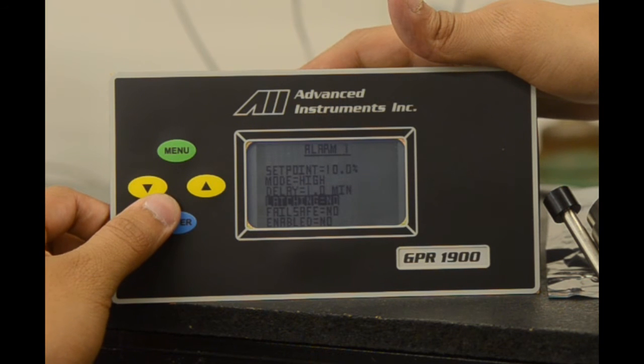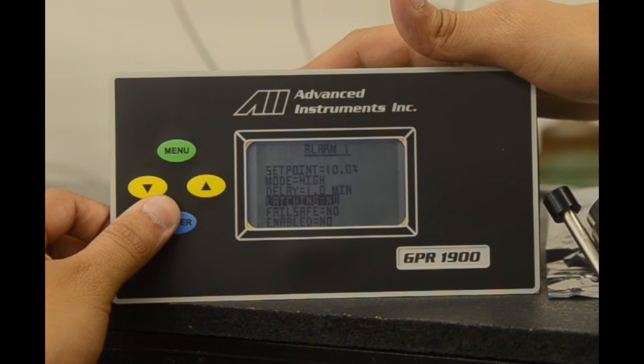We have a latching option, which is currently set as no. Again, enter to enable it. Latching allows the alarms to be in a latching mode where once an alarm set point has been reached, a user will have to physically come to the unit to release the analyzer from its energized position.